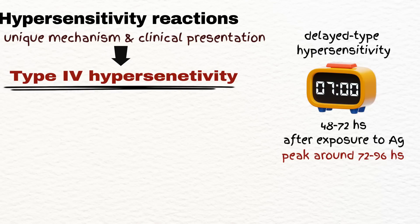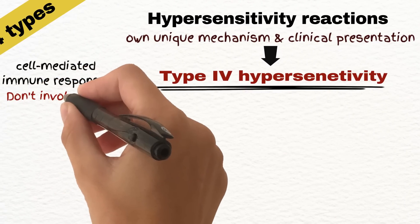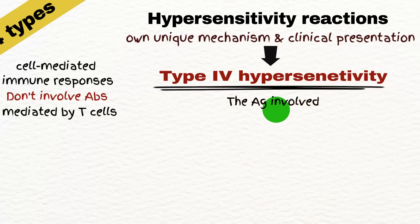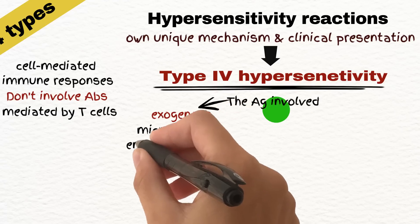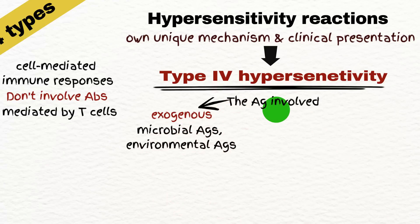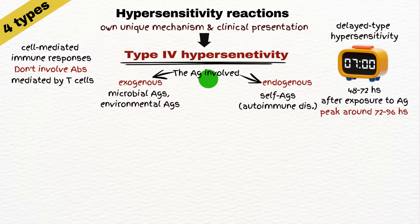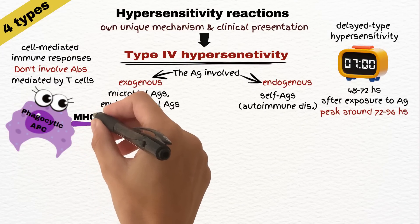Unlike other types of hypersensitivity reactions, type 4 reactions do not involve antibodies but are instead mediated by T-cells. The antigens involved can be exogenous, such as microbial or environmental antigens, or endogenous, such as self-antigens in autoimmune diseases. Dendritic cells or macrophages process these antigens and present them using MHC class II molecules.